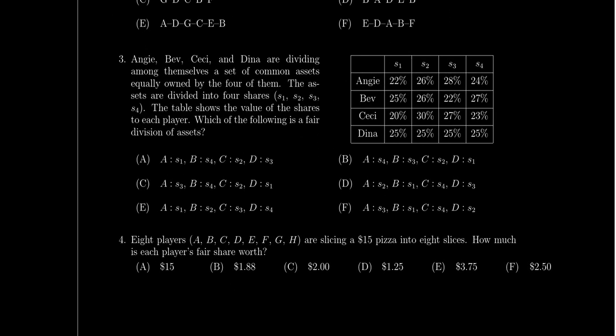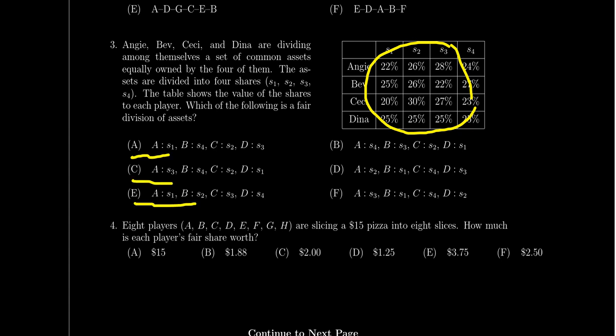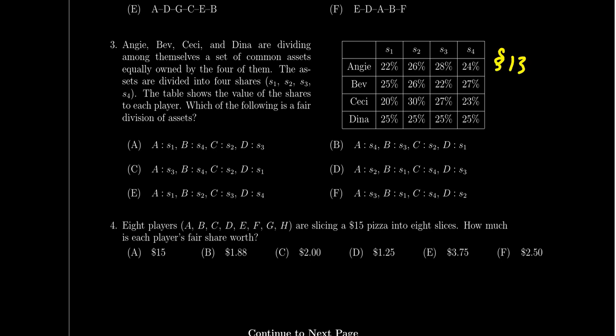Question three is about fair division. You'll see a value table showing how much various players care about different assets, and you have to decide which of the given options represents a fair division. You need to determine what a fair share is and which options give everyone at least a fair share. You don't need to run any fair division method — just understand what a fair share and fair division mean. This comes from lesson 13.